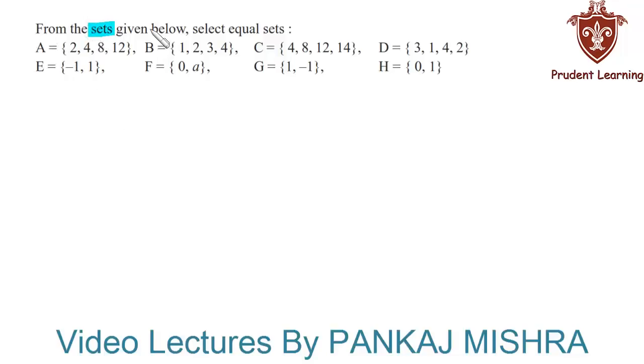From the sets given below, select equal sets. We know that two sets are said to be equal if they have exactly the same elements. Now from the given sets, you can clearly see that the elements in set B